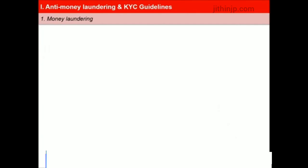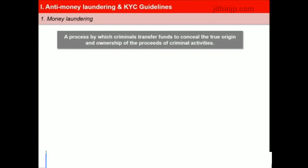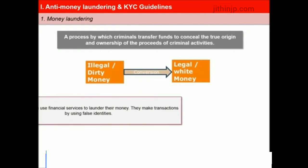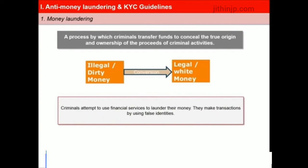Money laundering is the process by which criminals transfer funds to conceal the true origin and ownership of the proceeds of criminal activities. By this process, money can lose its criminal identity and appear valid. Criminals attempt to use financial services including banks and insurance to launder their money. They make transactions by using false identities, for example by purchasing some form of insurance and then managing to withdraw that money before disappearing once their purpose is served.